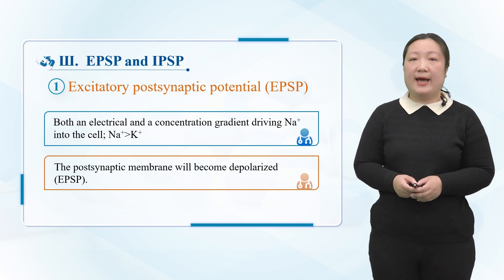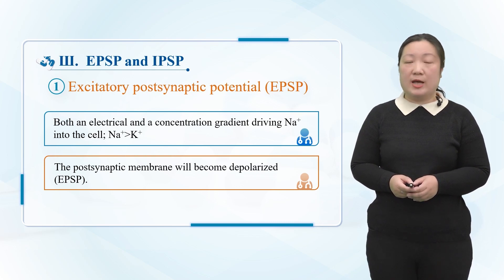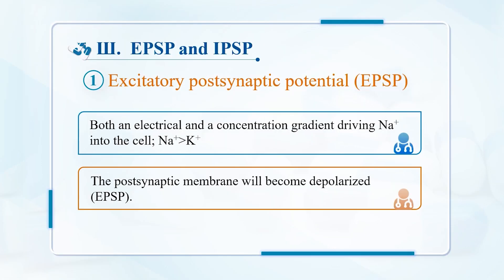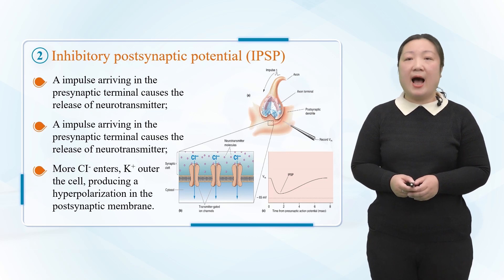The features of EPSP: it can spread in the form of electrotonic conduction and can be summated. If multiple action potentials are transmitted continually from the same pre-synaptic terminal, or a row of action potentials are transmitted from multiple pre-synaptic terminals at the same time, the elementary post-synaptic potentials can be superimposed to increase the potential amplitude. This process is called excitatory synaptic transmission.